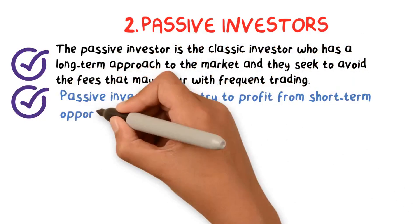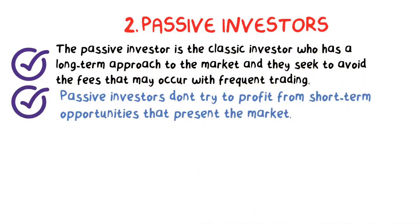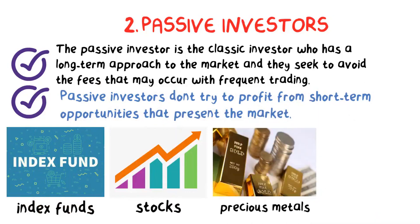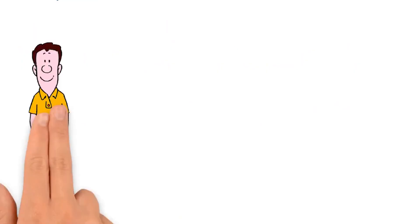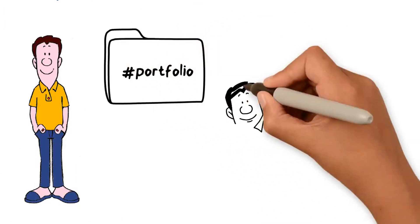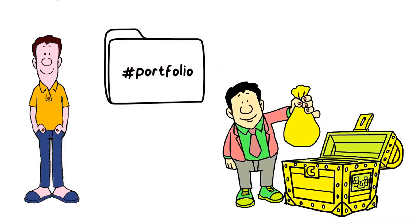Passive investors usually buy index funds, stocks, precious metals, and ETFs that track major indices. Basically, passive investors seek to build a well-diversified portfolio that protects their long-term investment and mitigates risk.